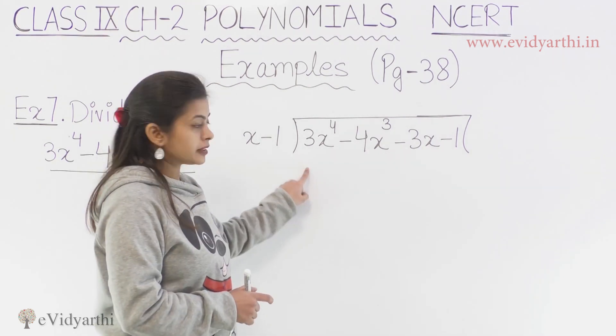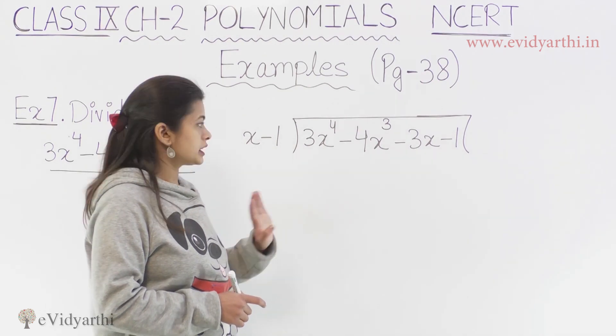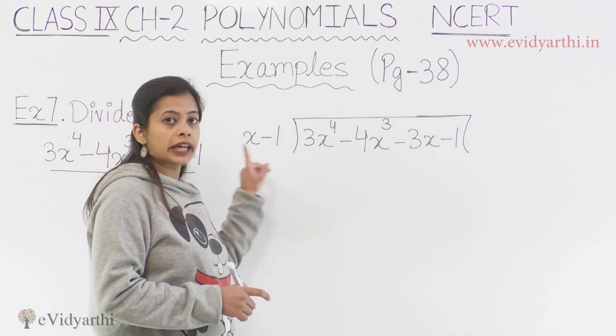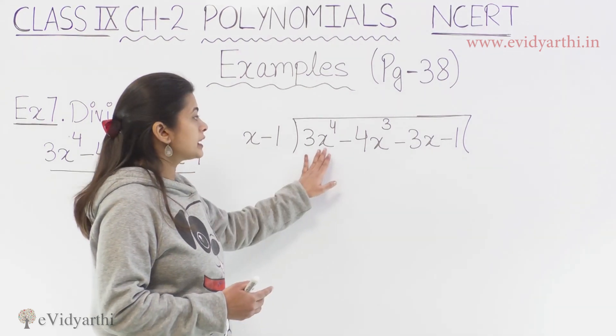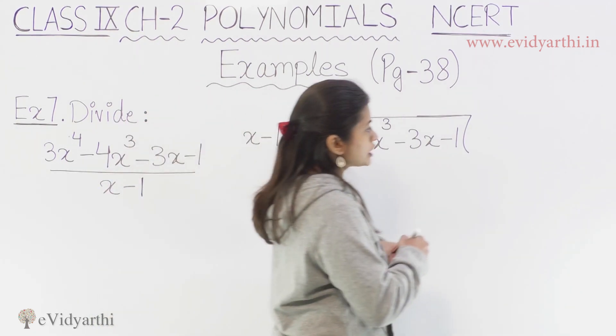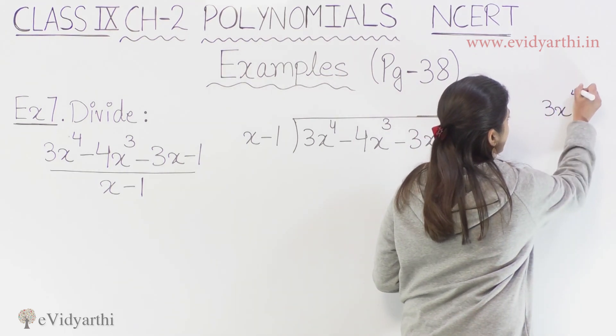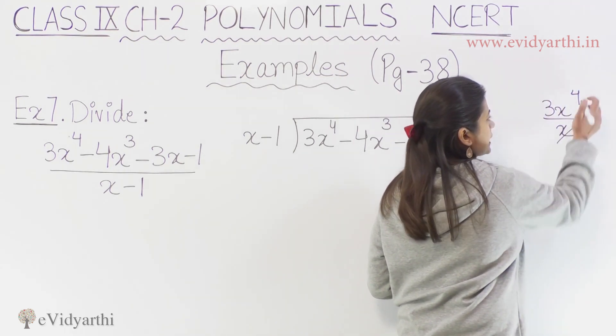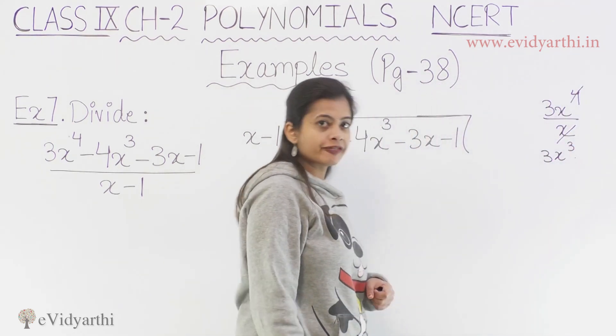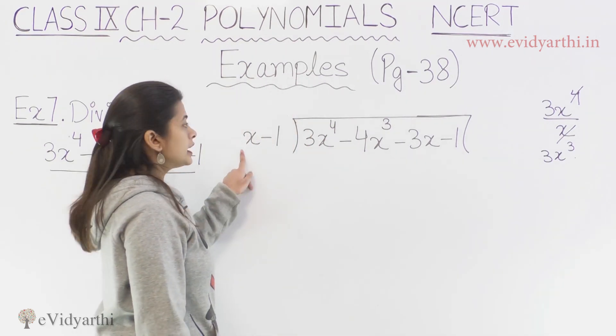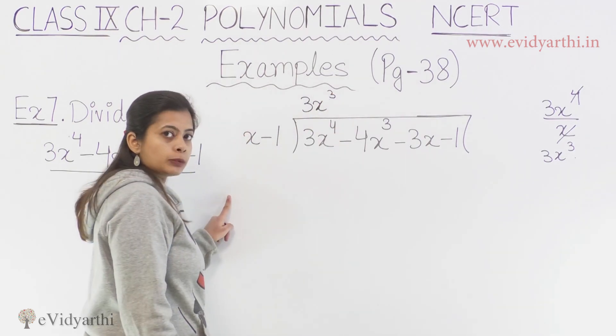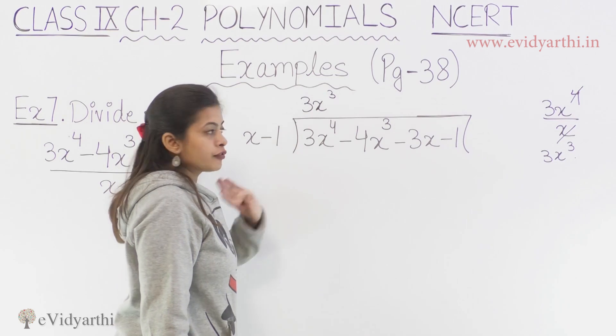So now proceeding with the first term, what we have? 3x ki power 4. So yaha par mere paas x hai sab se pahle. Kya sochna hai? Ki x ko kis se multiply kiya jaye ki 3x ki power 4 aagaye. Agar thoda bada term hai, confusion hai. What we can do? We can simply divide 3x ki power 4 by x. So we will get 3x^3. So isi tariqe se, maine judge kiya, ki agar mai x ko 3x^3 se multiply kardun, we will get 3x ki power 4.